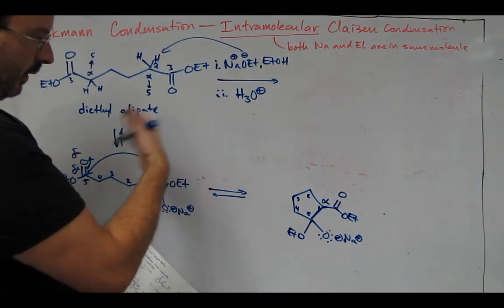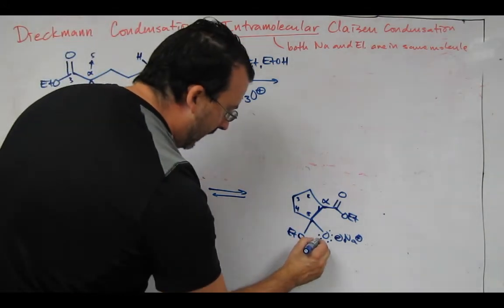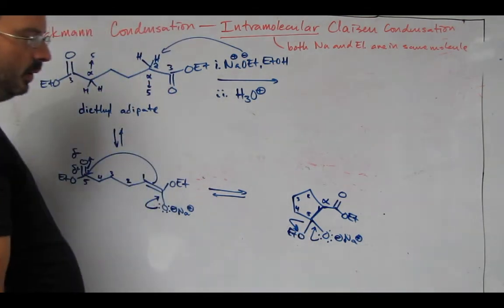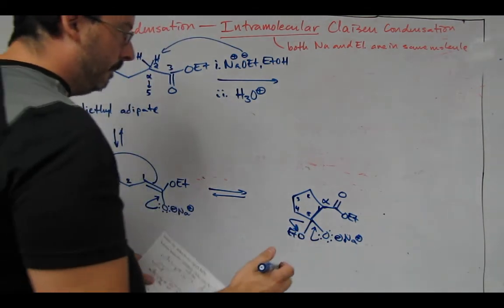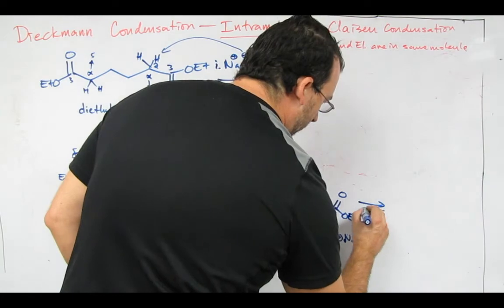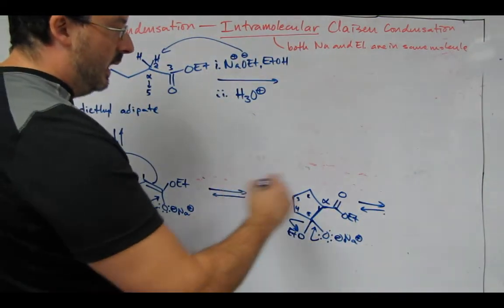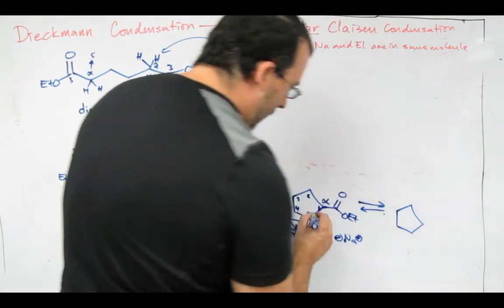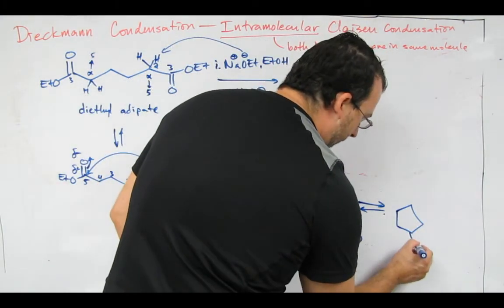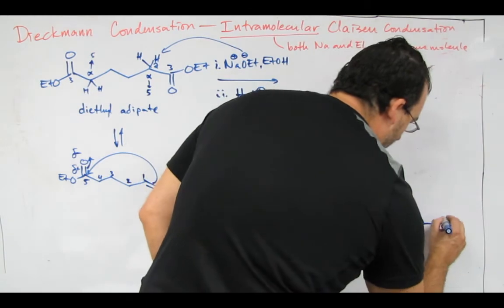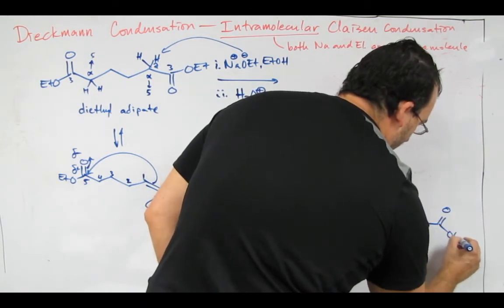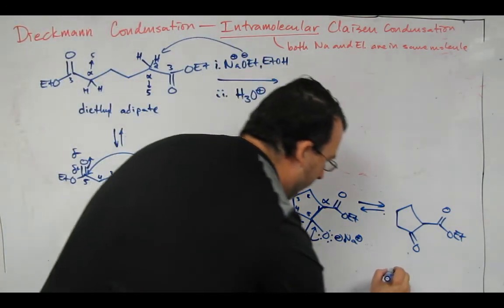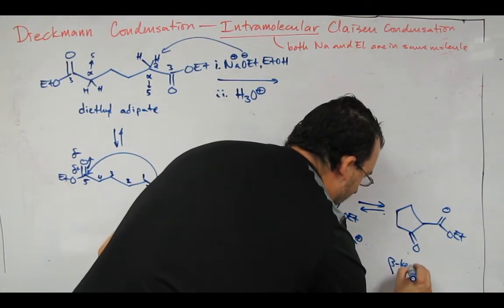This is the addition. We're now doing the elimination. So elimination is formation of a double bond. We're losing sodium ethoxide. So at this point we're still in equilibrium. That generates the ketone back at carbon five. There's our ethyl ester. So this is, again, a beta-keto ester.